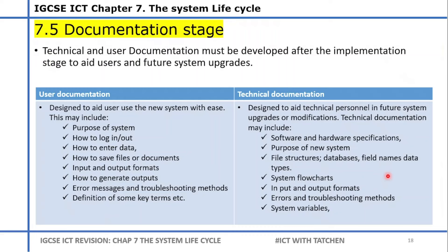At the documentation stage, technical and user documentation must be developed after the implementation of the new system. Documentation keeps track of how the system works, how a user can access the system, and how the system can be maintained. User documentation is designed to help users use the new system with ease — including when to call an expert and how to troubleshoot the system.